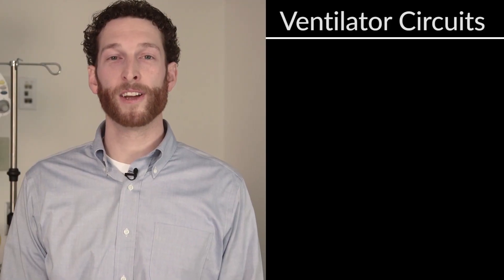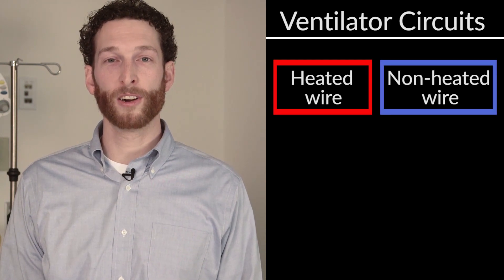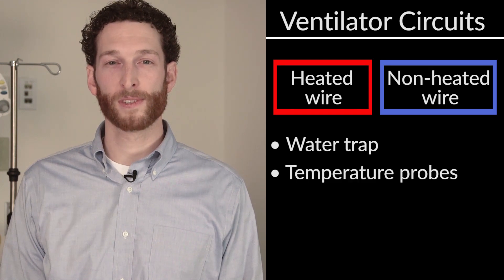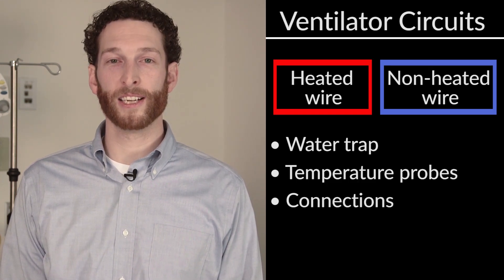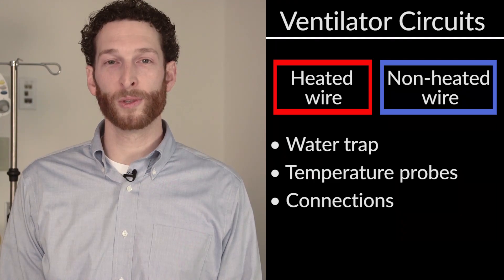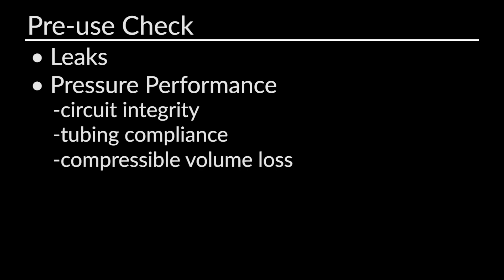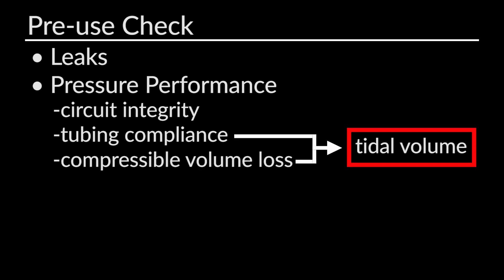It is always best to consult the operator's manual for patient mode selection and governing parameters. Next, we need to assess if our ventilator circuit is a heater wire circuit or a non-heated wire circuit, and whether it contains a water trap and temp probes. We will assess if the connections are tight so that we do not have any undue leaks. Part of this circuit assessment is to conduct a pre-use check, which generally encompasses a leak check and a pressure performance check to assess circuit integrity. It will also calculate your tubing compliance and compressible volume loss so that you may calculate effective tidal volume.